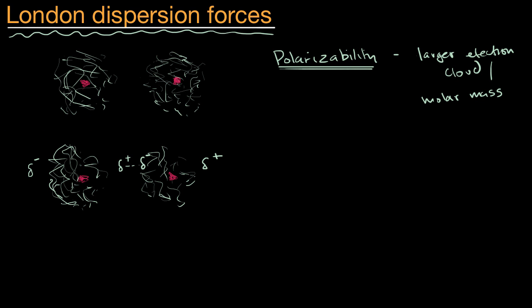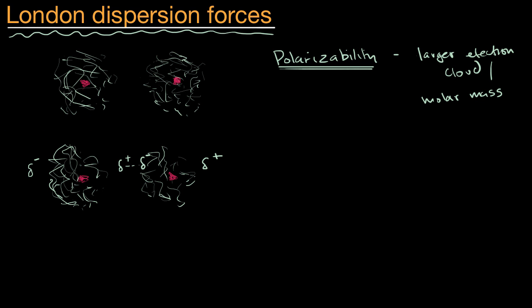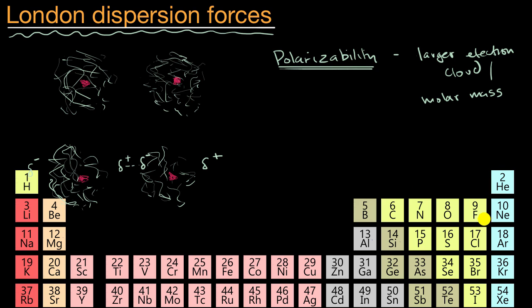For example, if you were to compare some noble gases to each other, we can look at the noble gases here on the right-hand side. If you were to compare the London dispersion forces between, say, helium and argon, which one would you think would have higher London dispersion forces? A bunch of helium atoms next to each other, or a bunch of argon atoms next to each other? Well, the argon atoms have a larger electron cloud, so they have higher polarizability, and so you're going to have higher London dispersion forces.